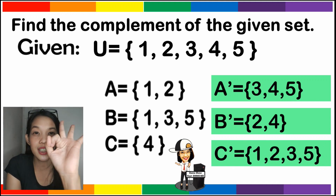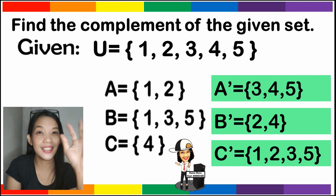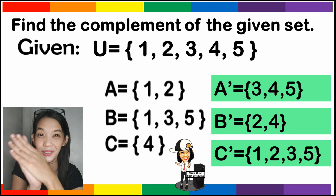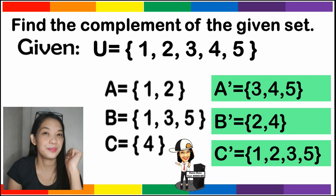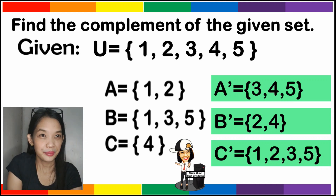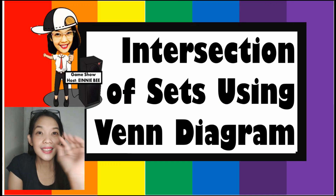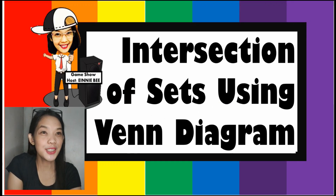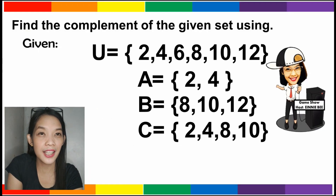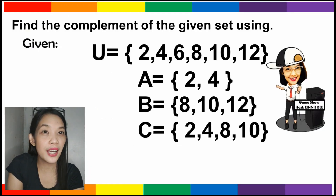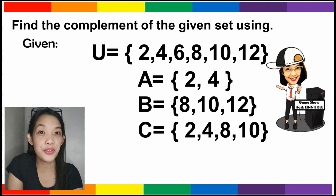So if you get 3 out of 3, then very good. Let us now study the complement of sets using Venn diagrams. We need to find the complement of the given set using a Venn diagram.